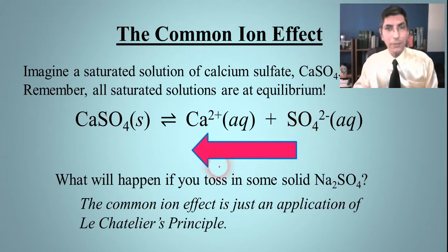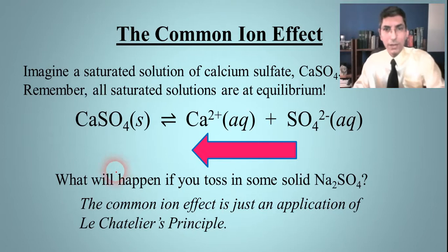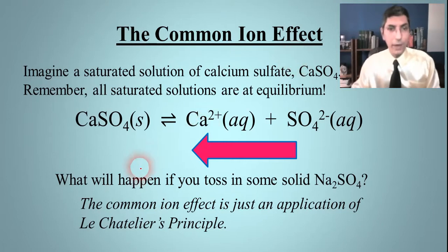So we toss in the sulfate, that's going to shift equilibrium to the left, which means that we're going to make calcium sulfate precipitate. That's what you would expect to see. And so whenever you have a question like this, it's just an application of Le Chatelier's Principle. So don't worry too much about the common ion effect as being anything other than just Le Chatelier's Principle, just an application of that.